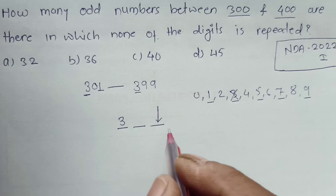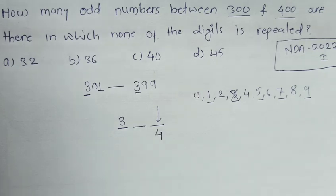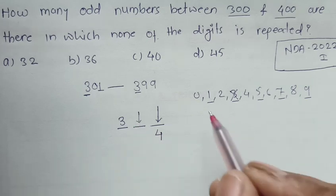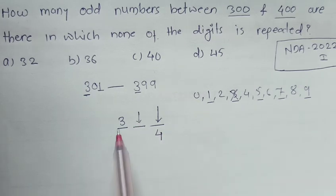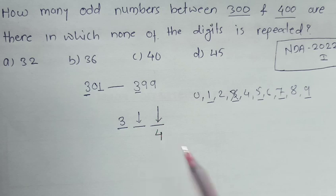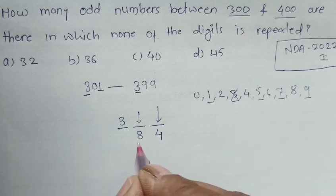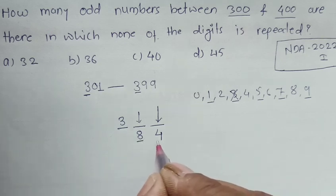And at this place, how many options will be there? So out of ten, I have used 3 and one digit here, so two digits we have used out of ten. The remaining eight will be here, so at this place I have eight options.